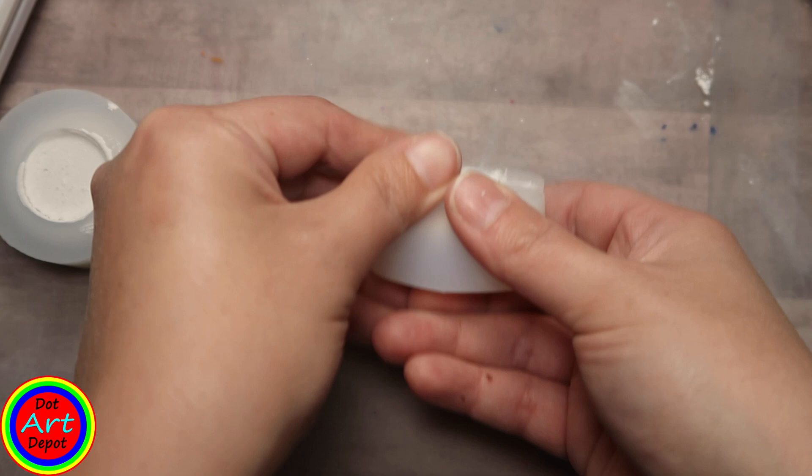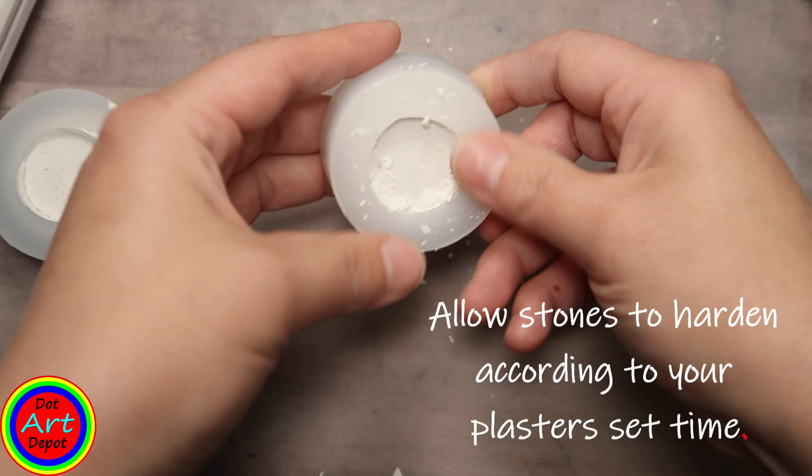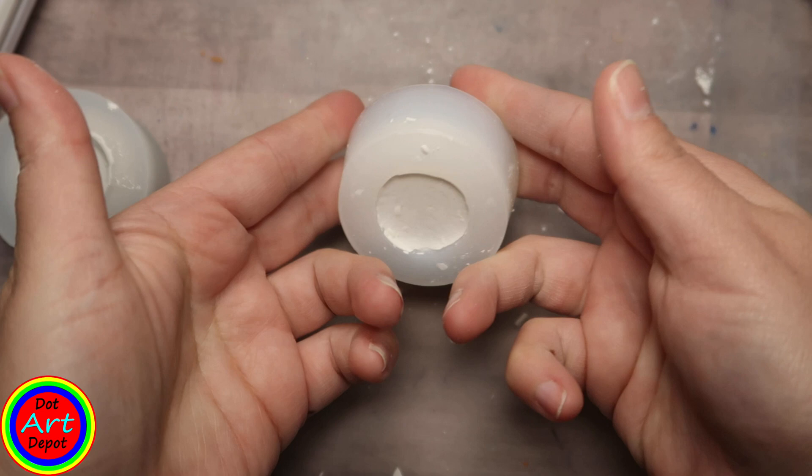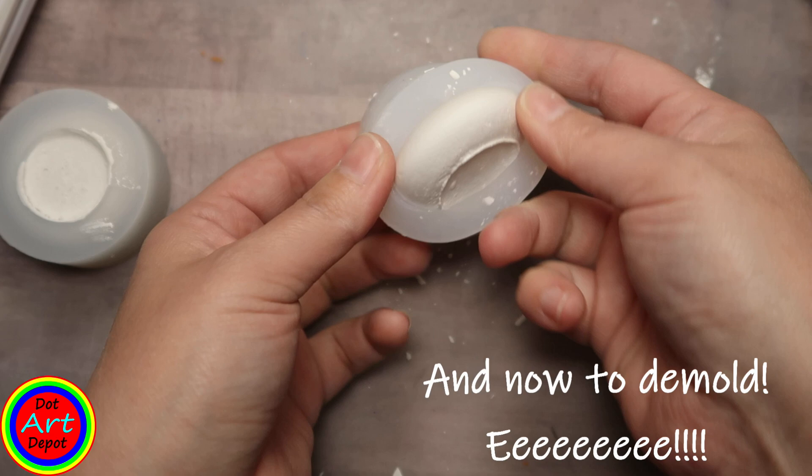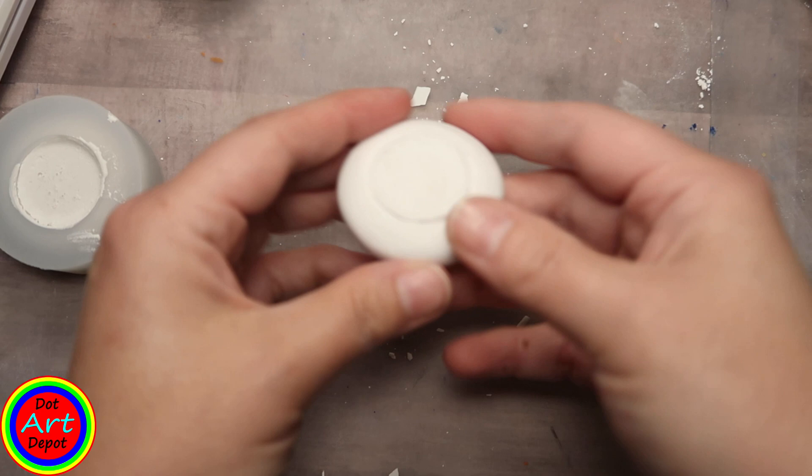Now for the best part, it's time to demold. Hydrocal sets up pretty quick—this set up in about 20 minutes, at least to demold it, which I love. I just place my fingers on the bottom rim and then push that top lip over top of the stone, and once you get that lip up over the stone it pops right out.